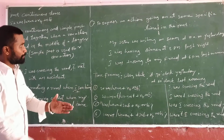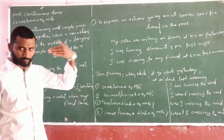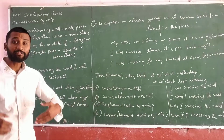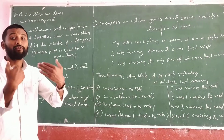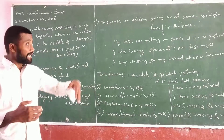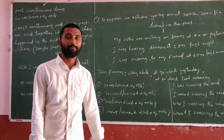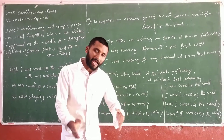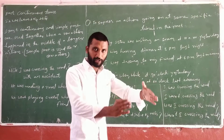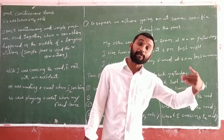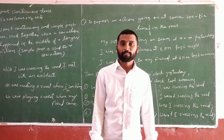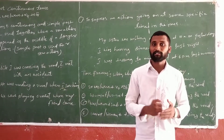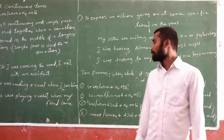So here, the action is in the form of going on — that means a continuous action. At some specific time in the past, the action was already started and it is going on. That type of action we explain in past continuous tense.